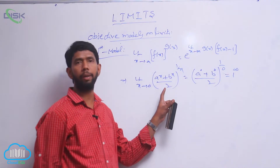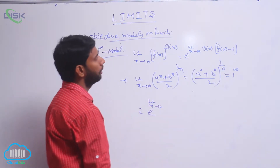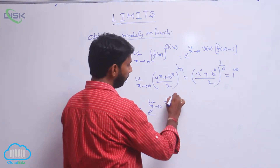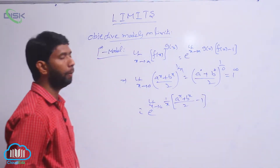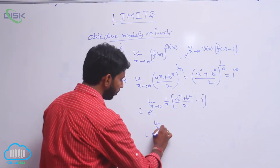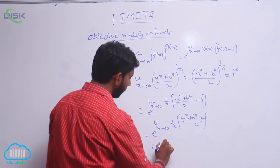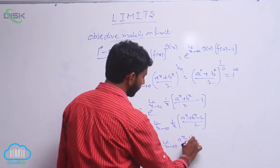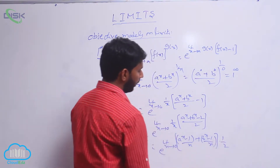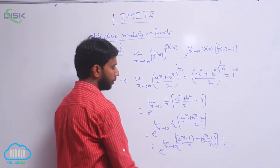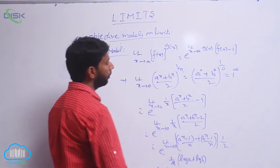Here f(x) = (a^x + b^x)/2 and g(x) = 1/x. Apply the formula: e power [limit extends to 0 of (1/x) into ((a^x + b^x)/2 minus 1)]. Taking LCM, this becomes e power [limit extends to 0 of (1/x) into (a^x + b^x - 2)/2], which equals e power [limit→0 of (a^x - 1)/x + (b^x - 1)/x, all times 1/2].